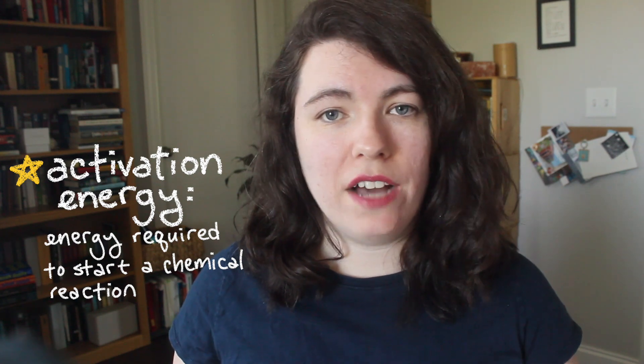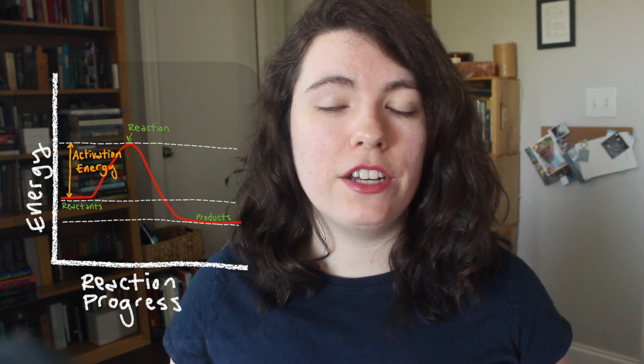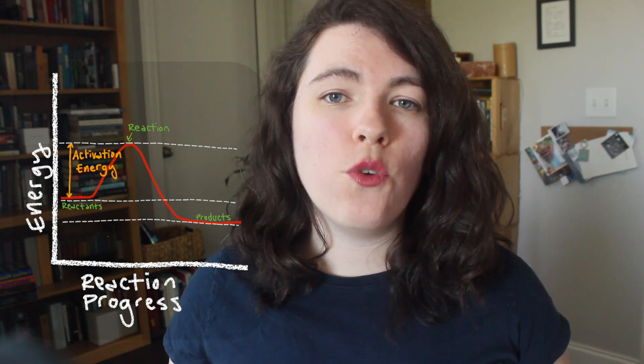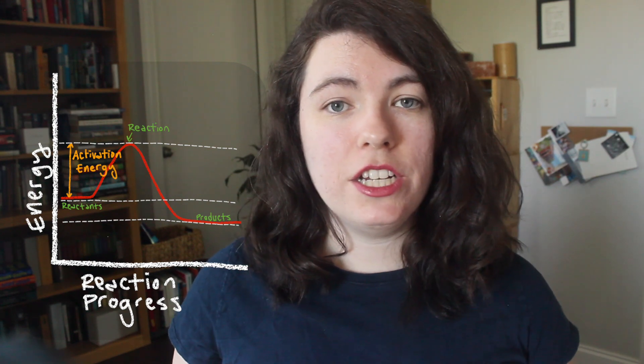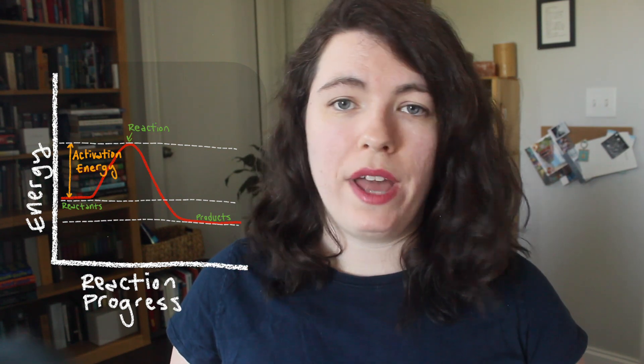The energy that's required to start a chemical reaction is called activation energy. The amount of activation energy required to start different types of reactions, as well as the amount of energy that results from a reaction, can be displayed in a graph like this. You can think of activation energy as a certain amount of energy that's required for the reaction to occur — without a specific amount of activation energy, the reaction won't happen.